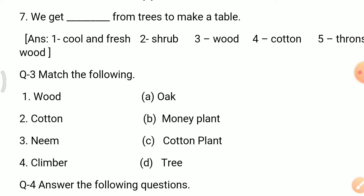Question 3. Match the following. Column A has: number 1 wood, number 2 cotton, number 3 neem, and number 4 climber.